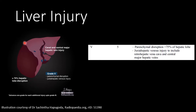A grade five injury is where at least 75 percent of the liver tissue has been disrupted, or you have a laceration that extends to a major central vein or the vena cava. These are very severe injuries that often have delayed complications, but patients can also be hemodynamically unstable requiring either angiography or surgery.